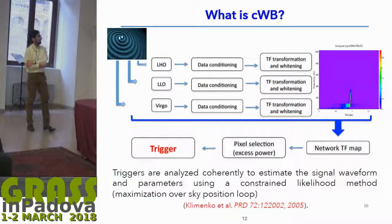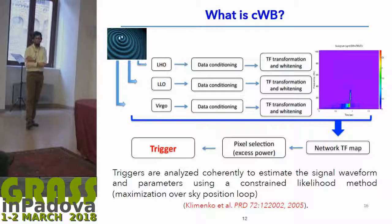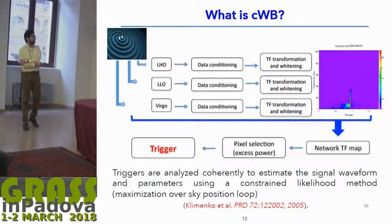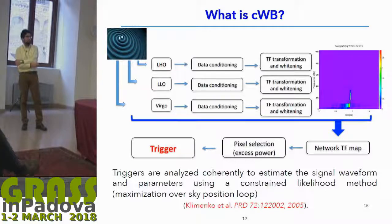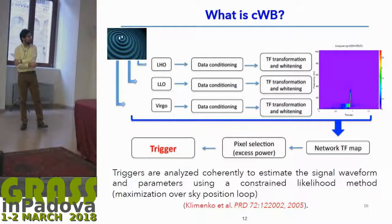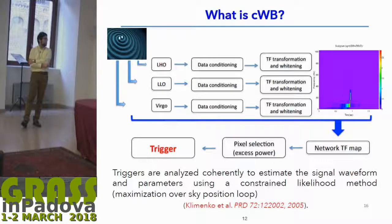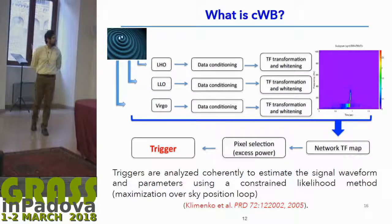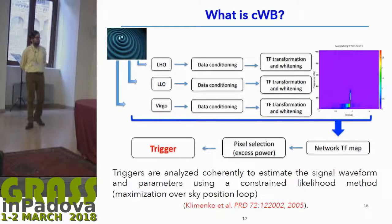This is a brief summary of how CWB works. Here I'm showing the case of a three-detector network, but this can be generalized for a network of N detectors. Basically, we have the data stream of the three detectors, which undergoes data conditioning, and after that the data is transformed into the time-frequency domain so that we are able to reconstruct time-frequency maps. A network time-frequency map is built using an excess power statistic to select those pixels that generate triggers. The triggers are then analyzed coherently for the whole network using a constrained likelihood approach in order to estimate the signal waveform and reconstruct the parameters of the source.